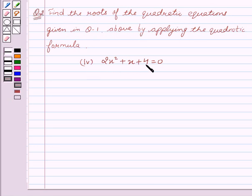Our equation is 2x square plus x plus 4 equal to 0. Now let's start with the solution.